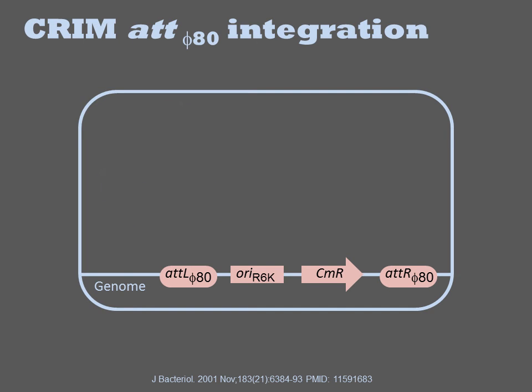The cells are grown at a temperature non-permissive for replication of the helper plasmid, 42°C, which results in the final product: a cell with the CRIM inserted into the genome and no other residual modification to the strain's original composition.